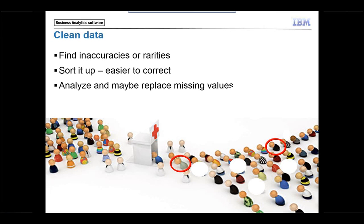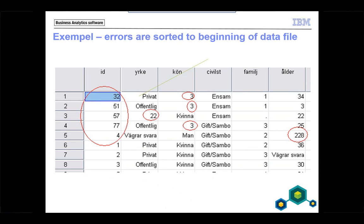Here is an example of how it looks when SPSS has found errors in data. It has sorted out five patients at the beginning of the list that include errors. We can see from the red circles that there are wrong codes — code three in the gender variable, where only one and two are valid. Then we have H228, which must be wrong. Sometimes it's an extreme value but could be correct, so you have to keep this value but be aware of it when doing analysis.